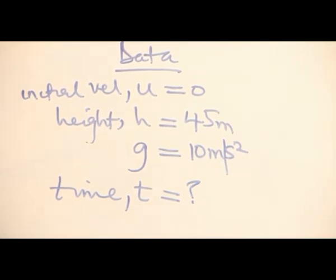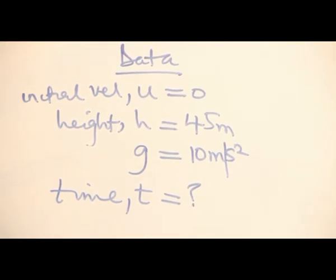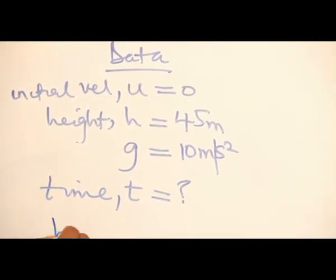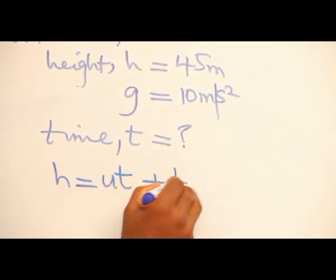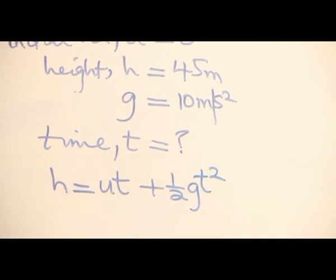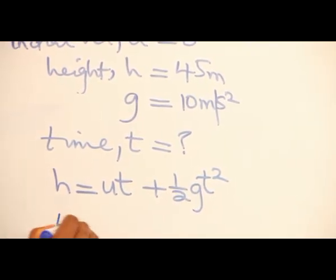When we compare with the four equations of motion we know, we use h = ut + ½gt². This is the equation that has all the variables we need.